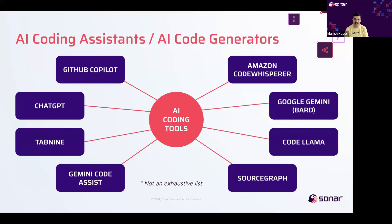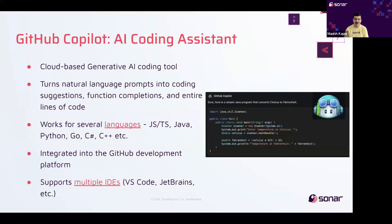These AI coding assistants offer suggestions in real-time, providing snippets and even entire functions based on your context and objectives. I will pick one tool here as an example, but the rest of the presentation today will apply to any of the other AI coding tools. We'll talk about GitHub Copilot today as the example. GitHub Copilot is one of the most popular AI coding assistants in the market today. It is a cloud-based generative AI coding assistant that is really good at what it does. However, it is important to remember that as the name says, it is a copilot and not a pilot. It is a coding assistant or a pair programmer that helps developers code faster. It turns natural language prompts to coding suggestions, function completions, and even entire lines of code. It supports several programming languages and can be integrated into the popular IDEs today.